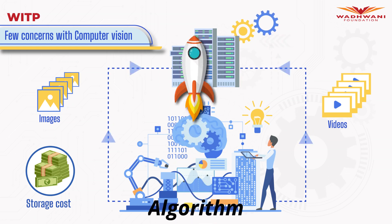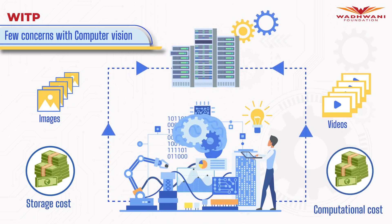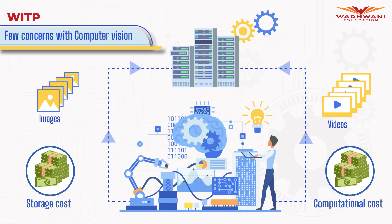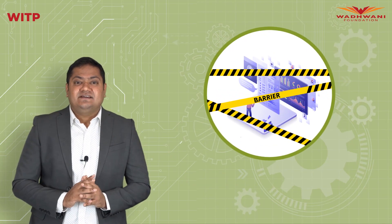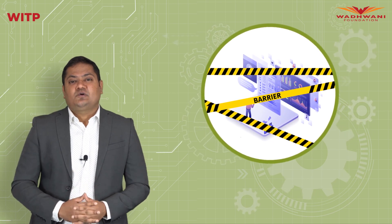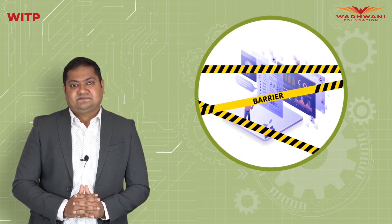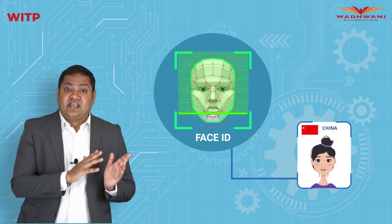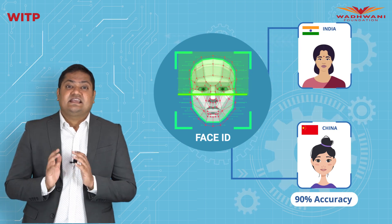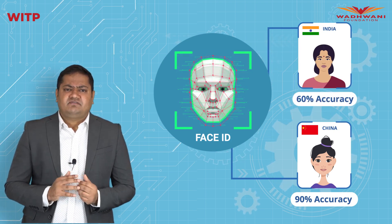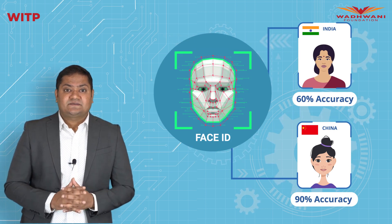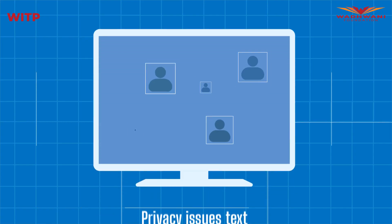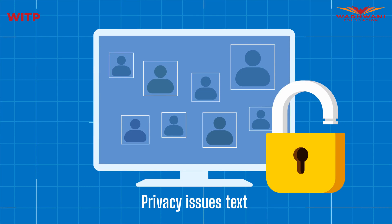Further, to train the algorithm fast, you would also need to spend on computational cost. These costs pose an entry barrier to new researchers looking to make their mark in the computer vision field. Computer vision can also learn the biases present in the data — for example, a face recognition system trained on faces in China may not work well to detect faces in India because of different facial patterns.